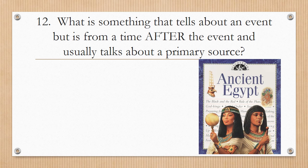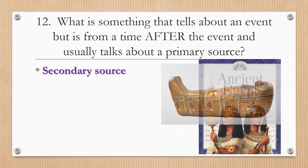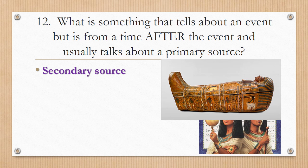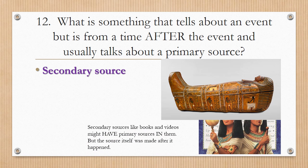Number twelve: what is something that tells about an event but is from a time after the event and usually talks about a primary source? Hopefully you said secondary source. That is an ancient Egyptian textbook — it may have a primary source or photograph of a primary source inside it, but the actual textbook itself is a secondary source. These secondary sources may contain primary sources, but the source itself was made after the event happened.